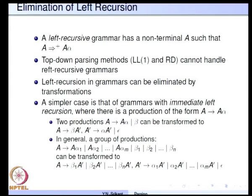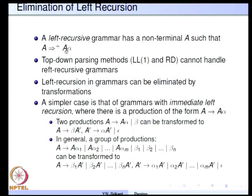Left recursive grammars pose problems to LL1 parser generation because they do not satisfy the LL1 condition. If a grammar has a non-terminal A such that A derives A alpha in one or more applications of the productions of A, then the first symbol of this sentential form is also A, and we can go on applying the productions as many times as we want. This is known as left recursion.